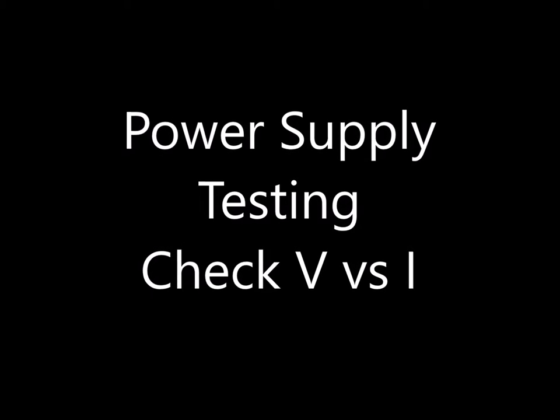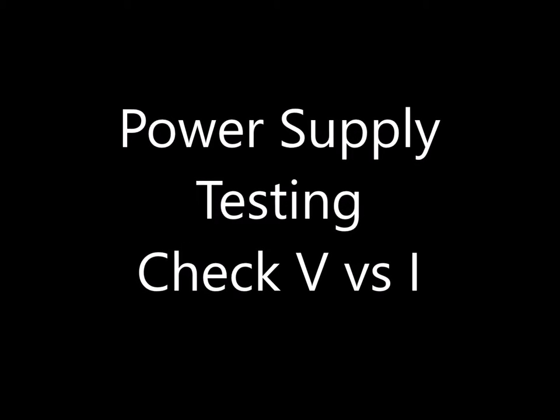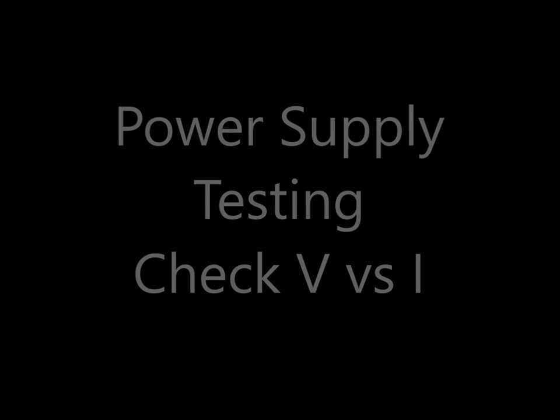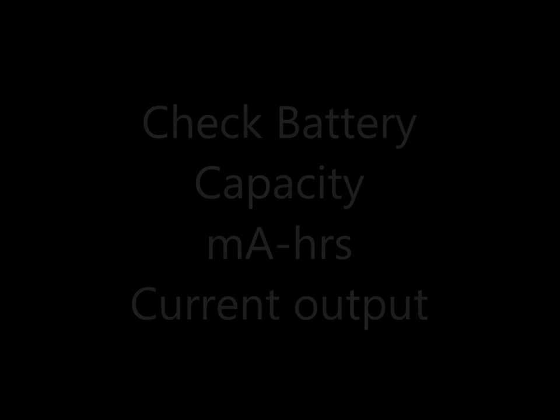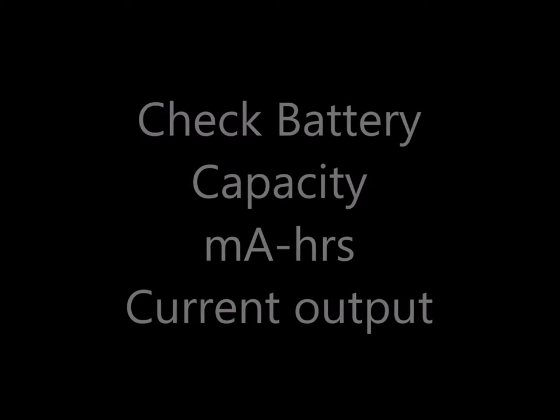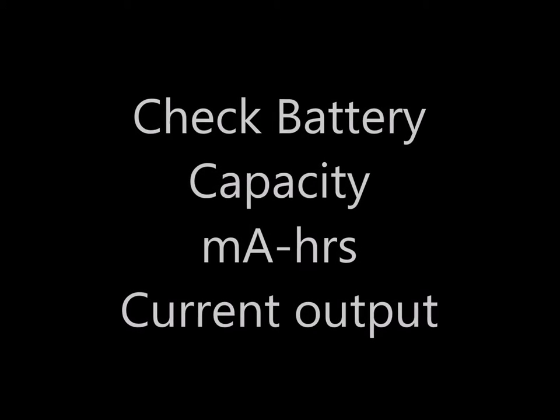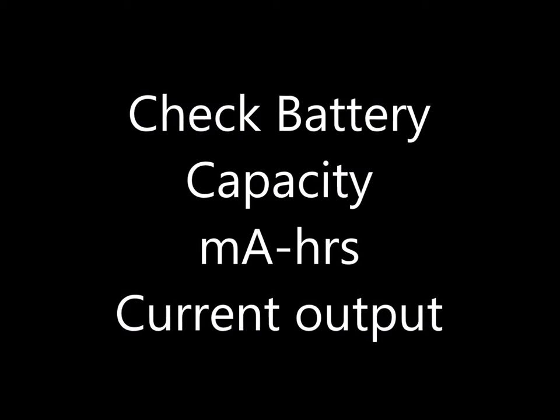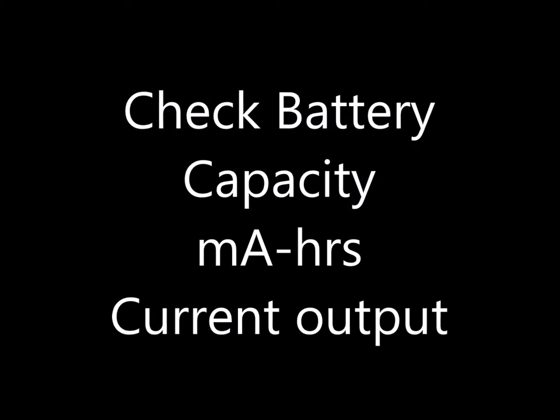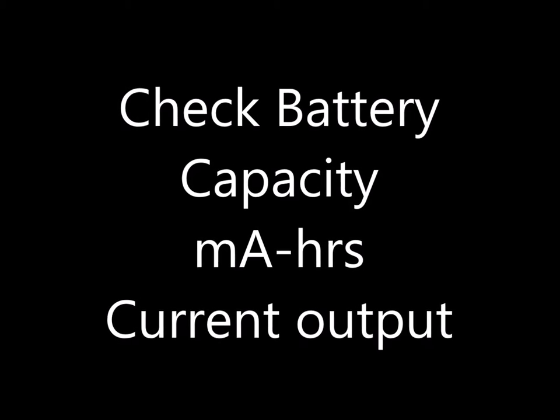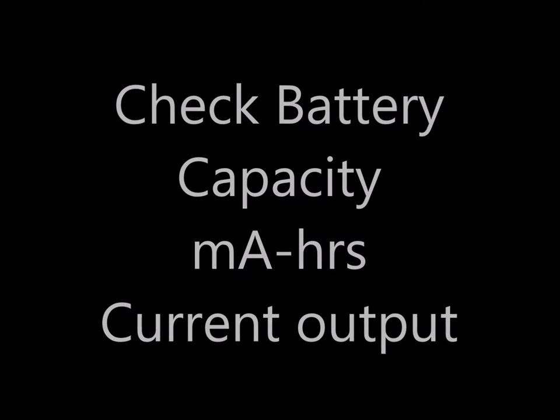One of the primary reasons to have a DC load is to check a power supply — the voltage drop with current increases. Another reason could be to check battery capacity, the milliamp hours of a battery or the rated output current.